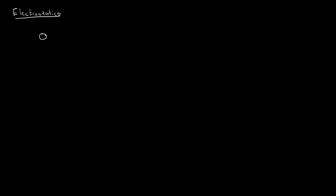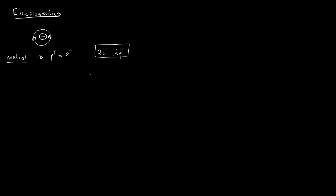First, we need to understand that each and every object or matter is made up of atoms. An atom has a nucleus with positive charges and some electrons around it. When we say an atom is neutral, it simply means that the number of protons equals the number of electrons.